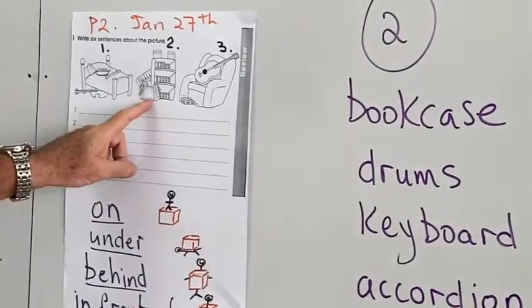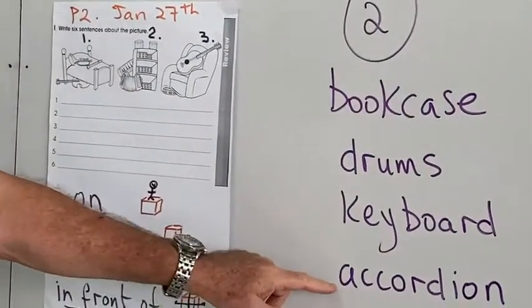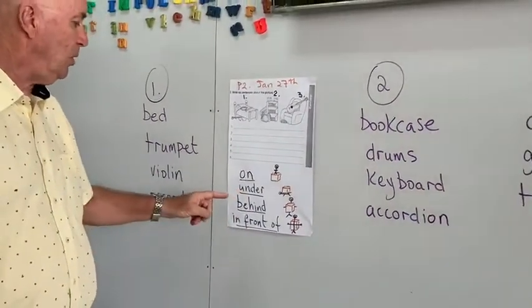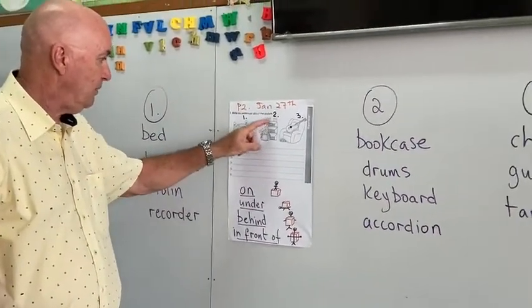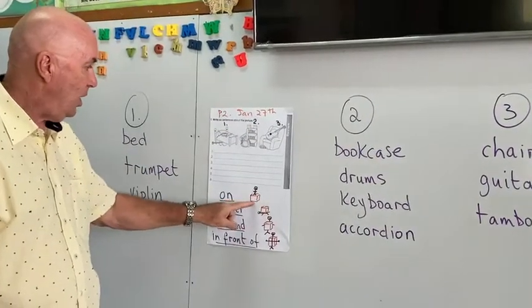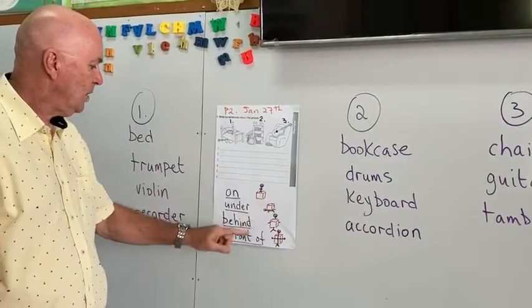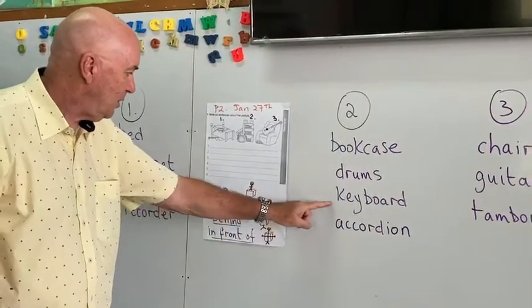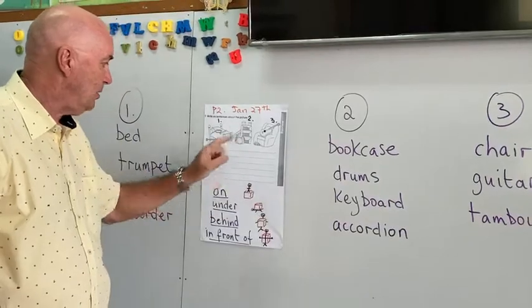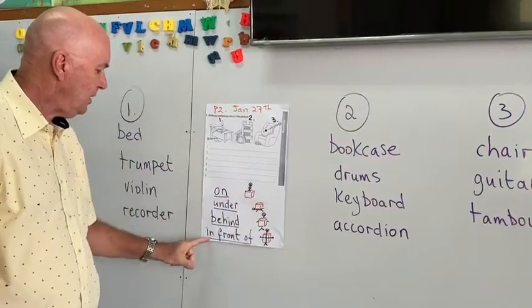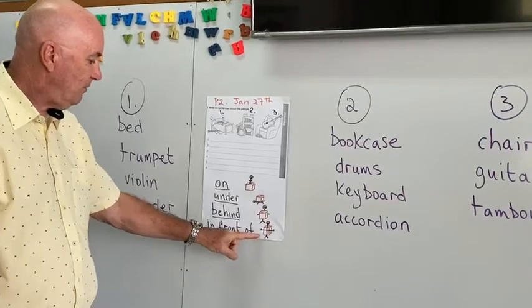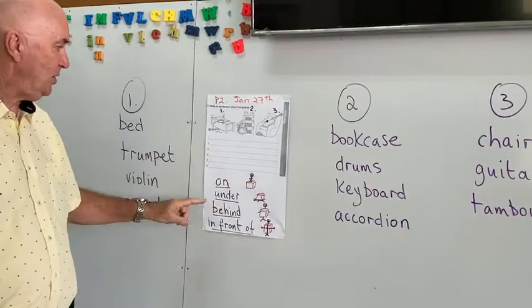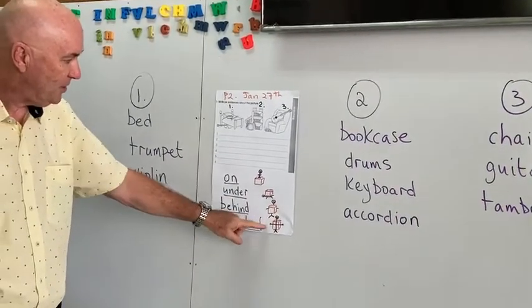So, where are the musical instruments? Well, we can use on. The drums are on the bookcase. Or we can use behind. The keyboard is behind the bookcase. Where's the accordion? In front of. The accordion is in front of the bookcase. So we can use behind or in front of.